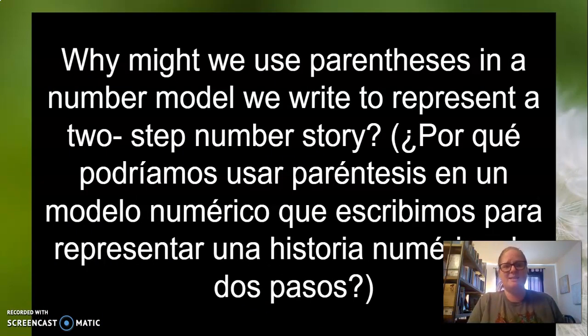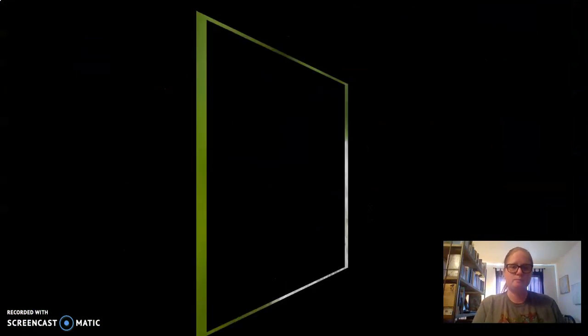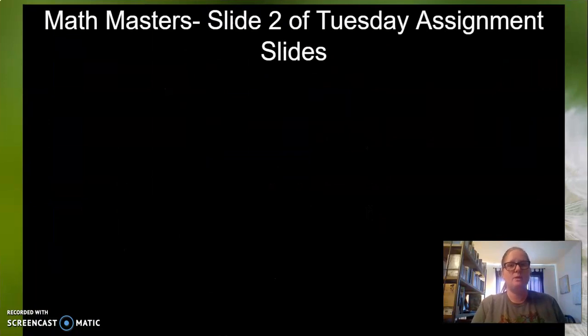Why might we use parentheses in a number model we write to represent a two-step number story? Why would we use parentheses when we are creating the two-step number story? Well, we need them so that way whoever is solving the problem is able to know what step to do first in order to get the right answer.